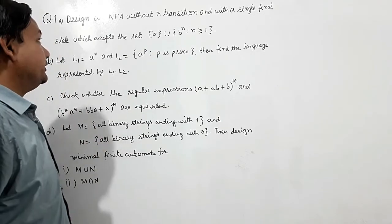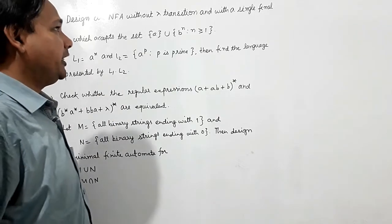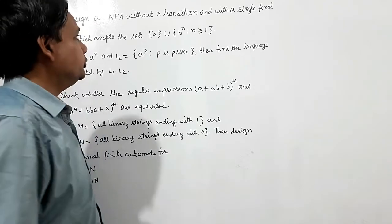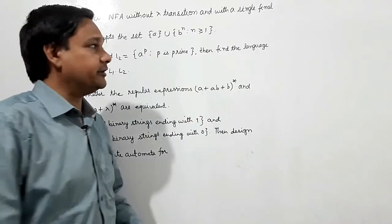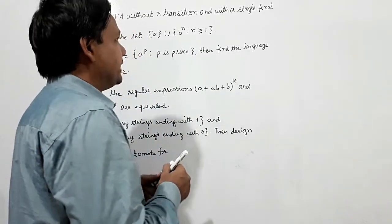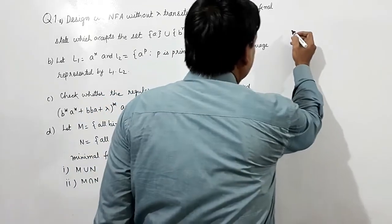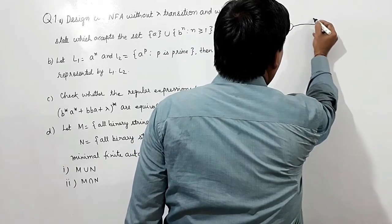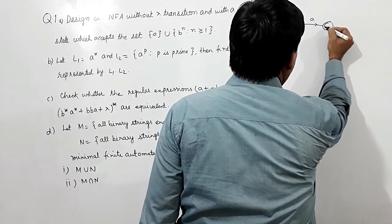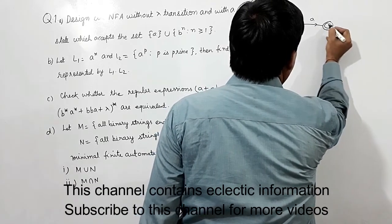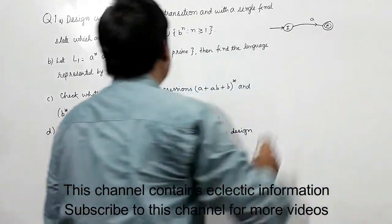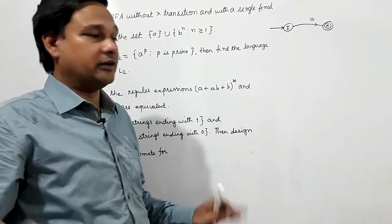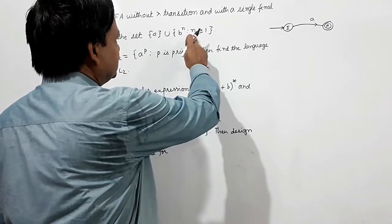Question number one: design an NFA without lambda transitions and with a single final state which accepts the set a union b to the power n, such that n is greater than or equal to 1. To accept the string a, if this is the initial state and this is the final state, only a should be accepted. There shouldn't be any lambda transition.